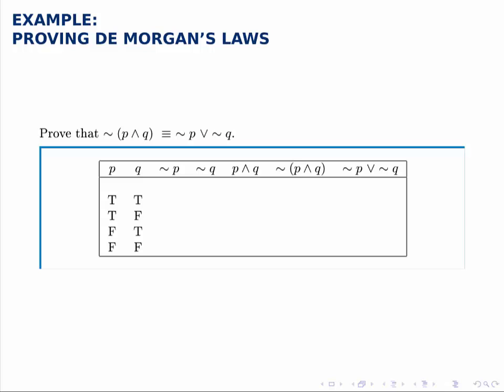Prove that these two statements are equivalent. The fact that these two statements are equivalent is one of De Morgan's laws, which says that to negate an AND, you negate each piece and replace AND with OR.